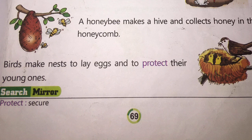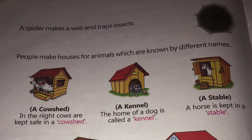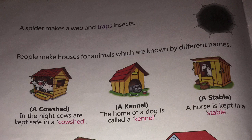A spider makes a web and traps insects. A spider makes its web, and with the help of this web, it traps insects for food. People make houses for animals which are known by different names. Sometimes people love to make a house for their own pet, and these human-made houses for animals are known by different names.